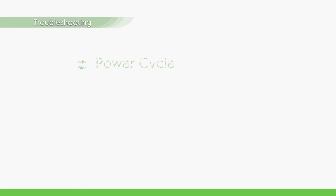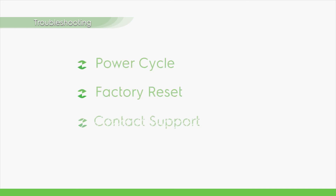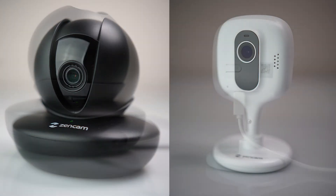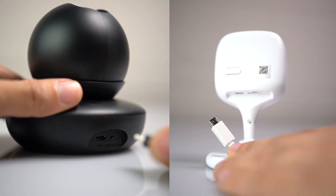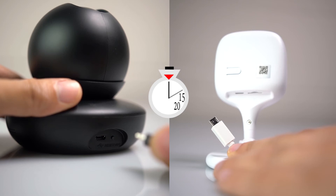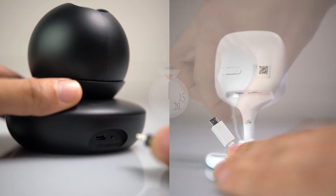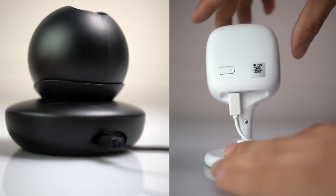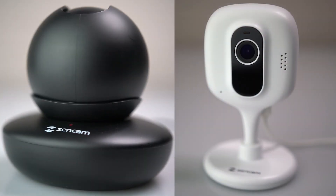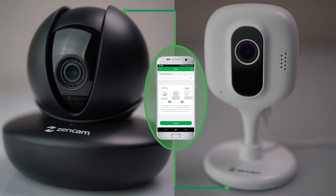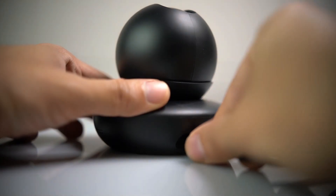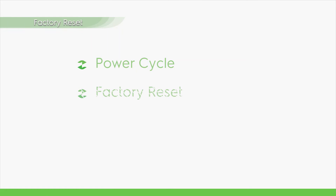If the issue still persists, there are some common troubleshooting techniques you can take. To power cycle the device, remove it from its power source and allow the device to shut down — this should take approximately 15 to 20 seconds. Afterwards, plug the camera back in with its power supply and allow the device to boot back up. When the device is ready, try connecting to it again. If a power cycle was not successful, a factory reset may need to be performed.